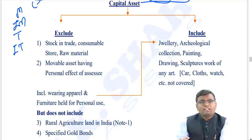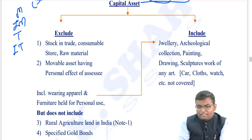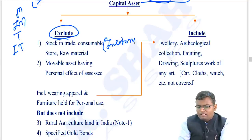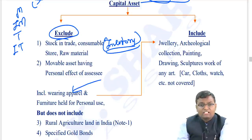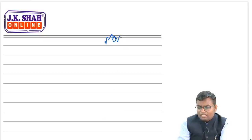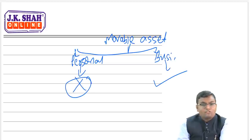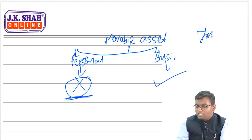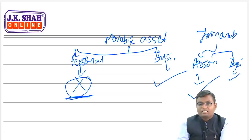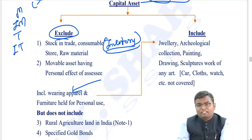Certain things are excluded from capital asset. Number one: stock in trade, consumable stores, and raw materials - inventories of a business attract PGBP income, not capital gain. Number two: movable assets held for personal use, including wearing apparel and furniture. If a movable asset is a personal asset, it is not a capital asset. However, immovable property - whether personal or business - is always a capital asset.